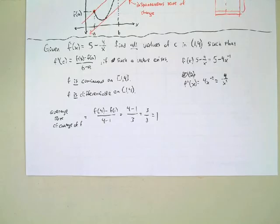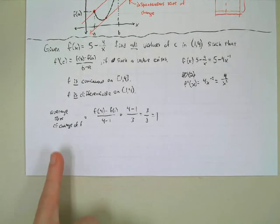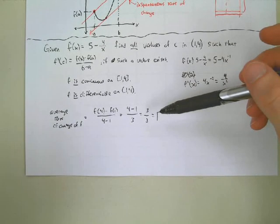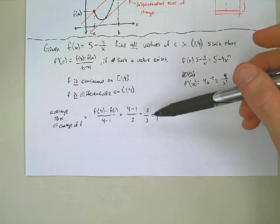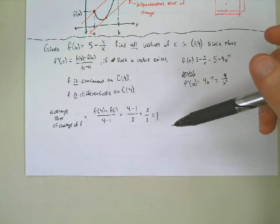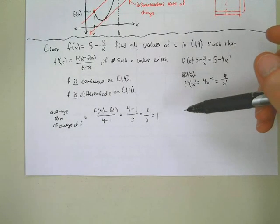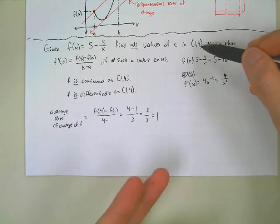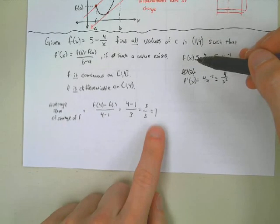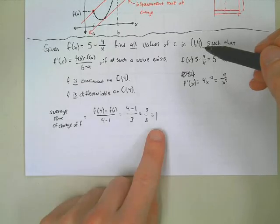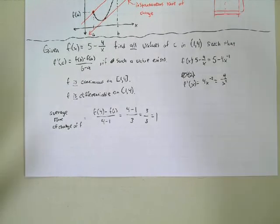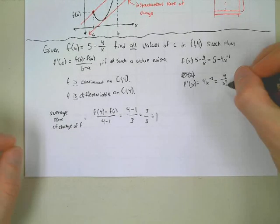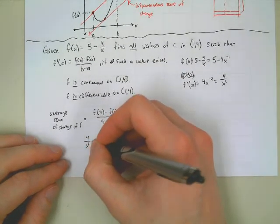So we found the average rate of change is 1. Since the mean value theorem applies, our instantaneous rate of change must equal 1 at some point. The mean value theorem does not tell you where — we know it's between 1 and 4, so there's some x value between 1 and 4 that when plugged into the derivative gives the average rate of change of 1. So we set the derivative equal to 1: 4 over x squared equals 1.